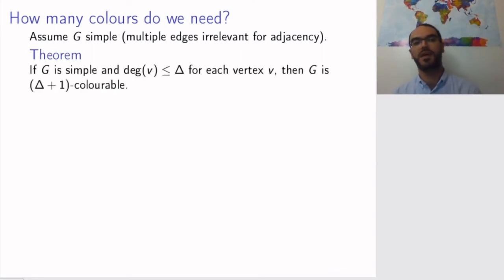Our first result will relate the number of colors to the degrees of the vertices. If you have a simple graph, says the theorem, and each vertex has degree no bigger than delta for some number delta, seven or whatever, fixed delta, then G is (delta + 1)-colorable. So you need one color more than the degree of the highest degree vertex.